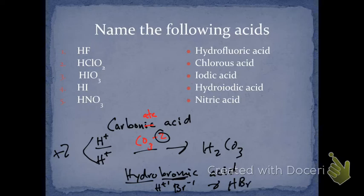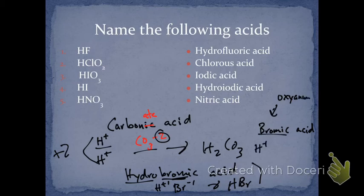So now be careful, because if I said, okay, let's do bromic acid. As soon as I see that there's no hydro, I know this is an oxyanion, okay? So we know there's going to be an H+, but I know this is going to be a polyatomic.